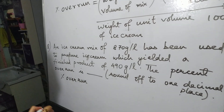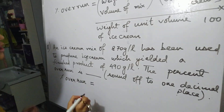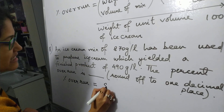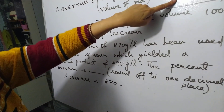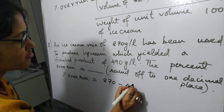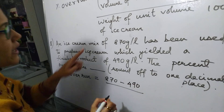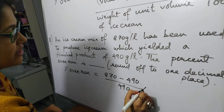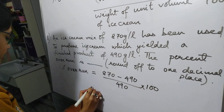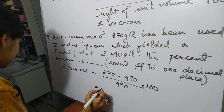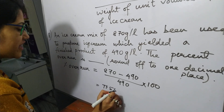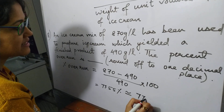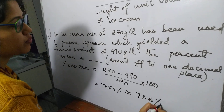Now when we calculate the answer: percentage overrun equals the weight of unit volume of mix, which is 870, minus the weight of unit volume of ice cream, which is 490, divided by the weight of unit volume of ice cream, which is 490, multiplied by 100. When you solve this you get 77.55 percent. Rounding off to one decimal place, the answer is 77.6 percent.